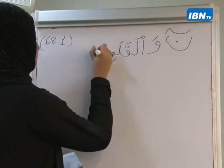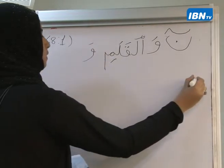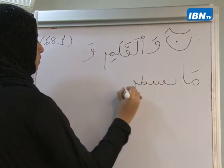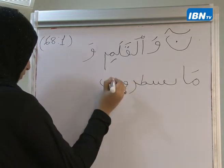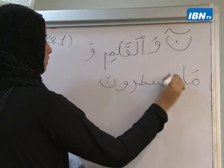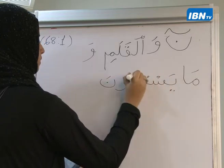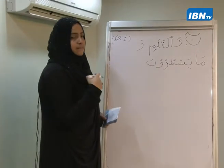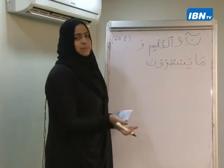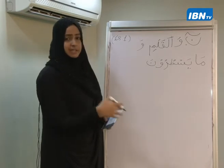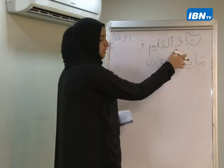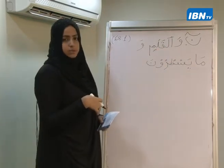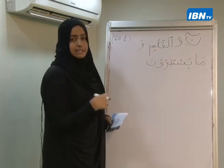The verse goes: Nun, Walqalemi, wama yasthurun. So 'noon' — as you all know, we don't know what it actually means. There are many interpretations from the commentators. But what I want to look at is وَالْقَلَمِ وَمَا يَسْطُرُونَ — which means 'by the pen and what the scribes write.'